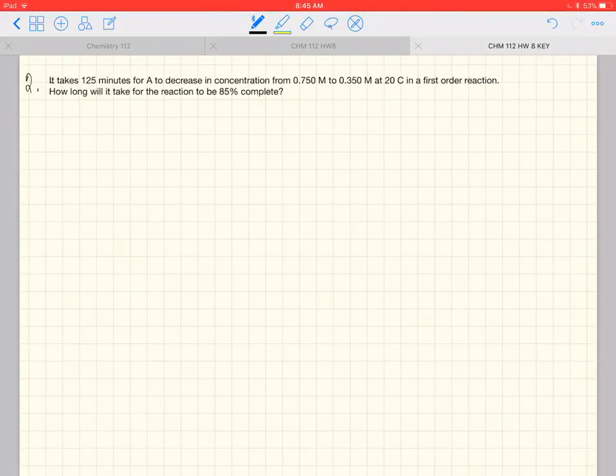Here's number two. It takes 125 minutes for A to decrease in concentration from 0.750 molar to 0.350 molar at 20 degrees C in a first order reaction.